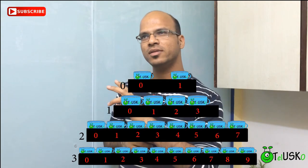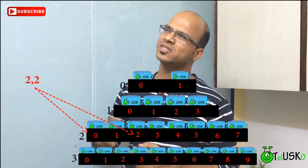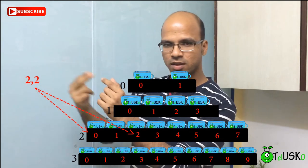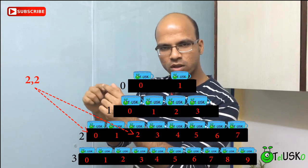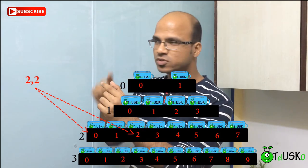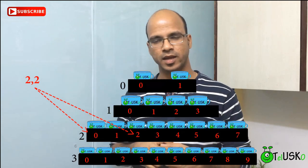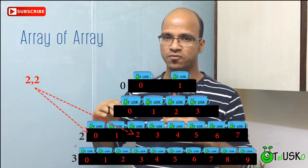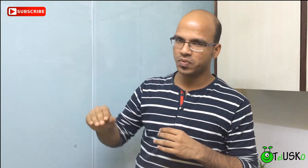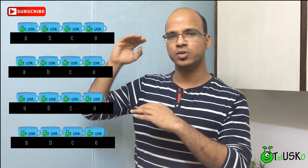Let's say you want to access the third cup of the third tray. You have to mention: I want to access the third tray — that's your row number. Then you want the third cup — that is column index two. So you say two comma two, meaning the third tray and third cup. That is your array of arrays. If all trays are the same size — say four trays each with four cups — that is your two-dimensional array.